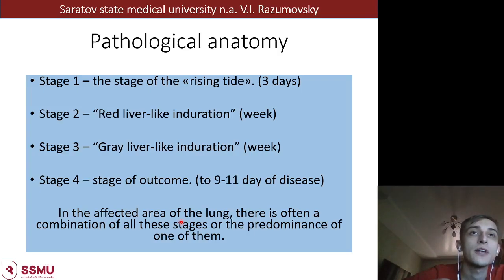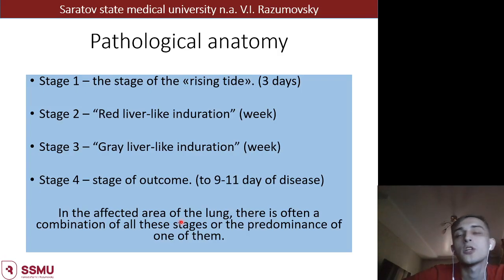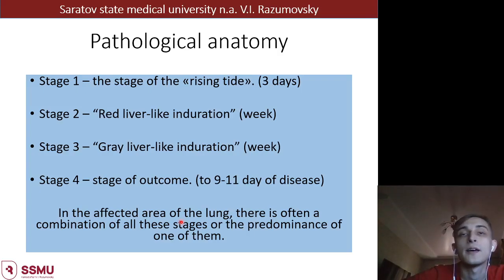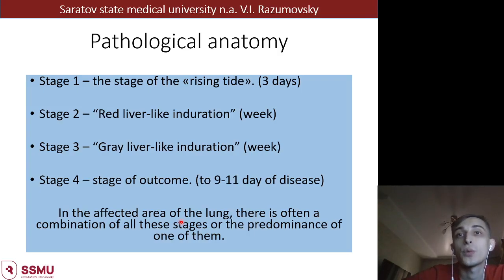Pathogenesis includes four stages, and the development of all these stages takes about 10 days. The first stage is the stage of rising tide, characterized by edema and hyperemia of the lung. The second stage is the stage of red liver-like induration, or red hepatization, where we see accumulation of erythrocytes in the lung tissue and the lung becomes solid and red in color. In the third stage - grey liver-like induration - we can see accumulation of leukocytes in the lung tissue. The fourth stage is the stage of outcome, which may be favorable or complicated.